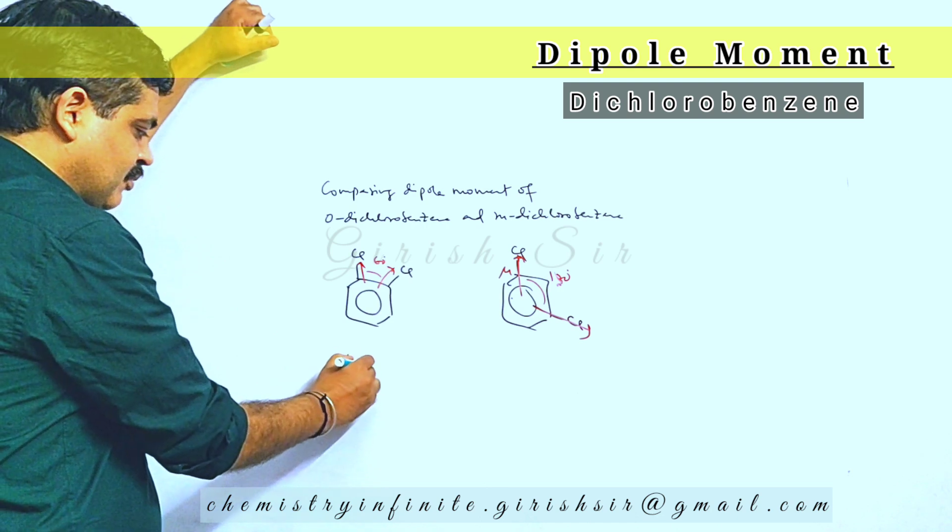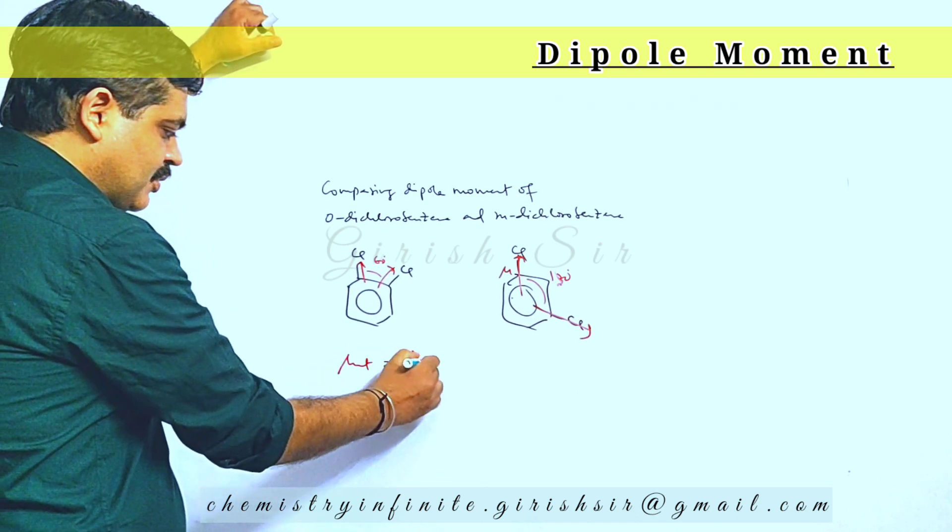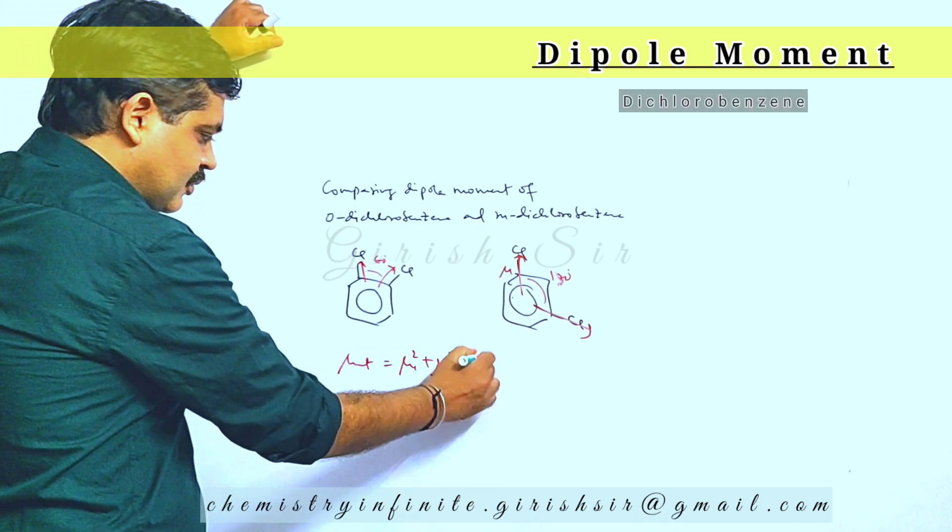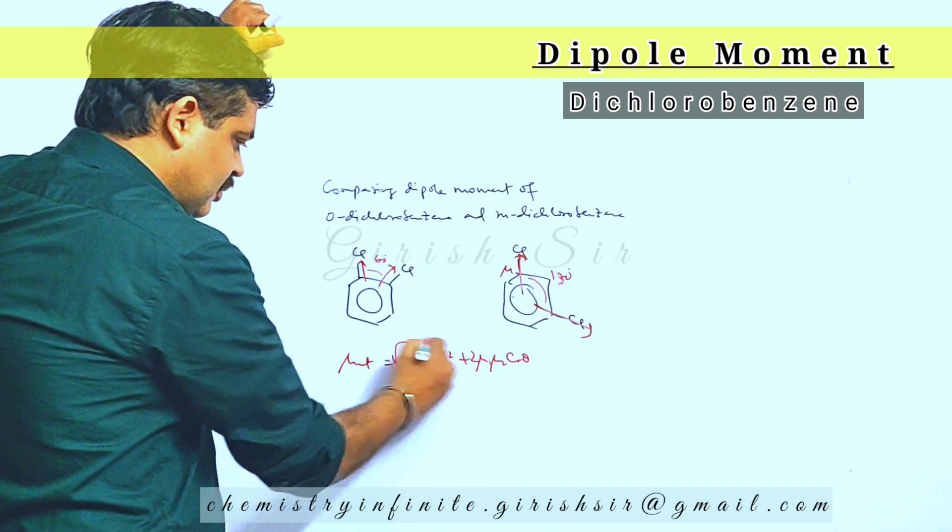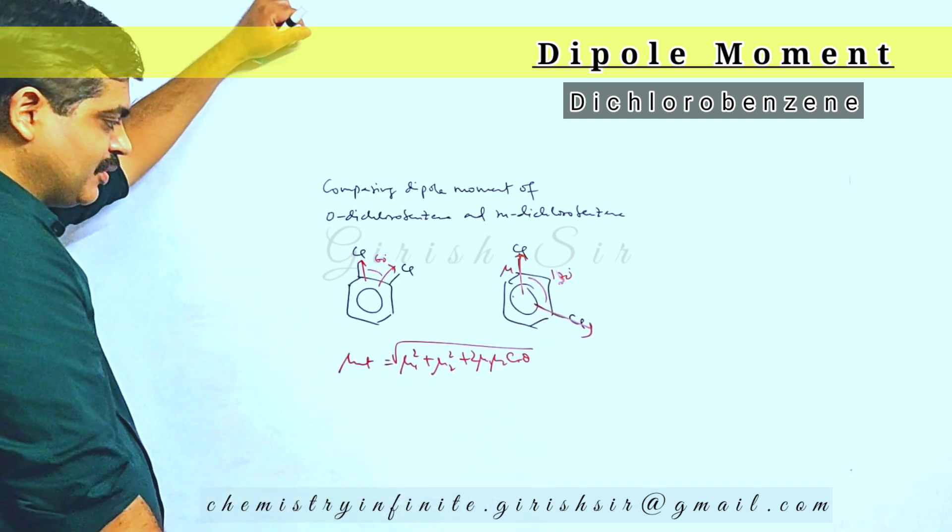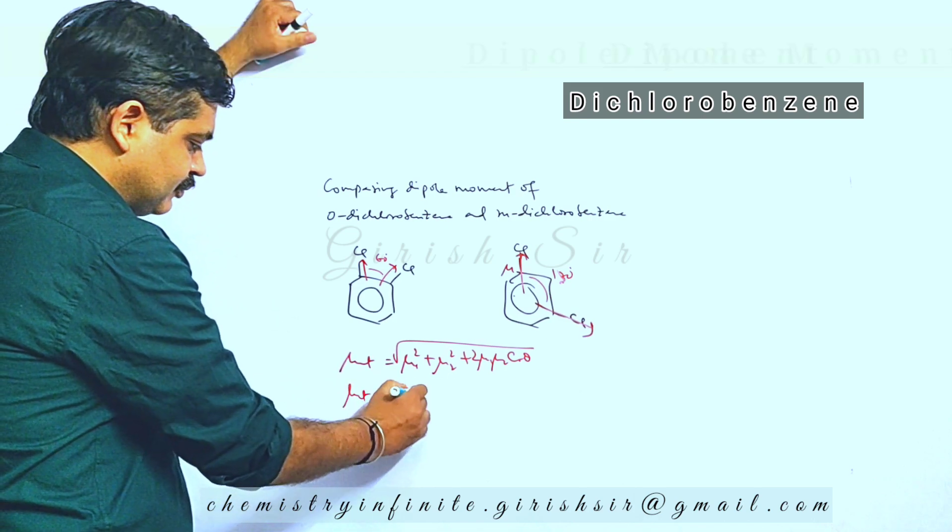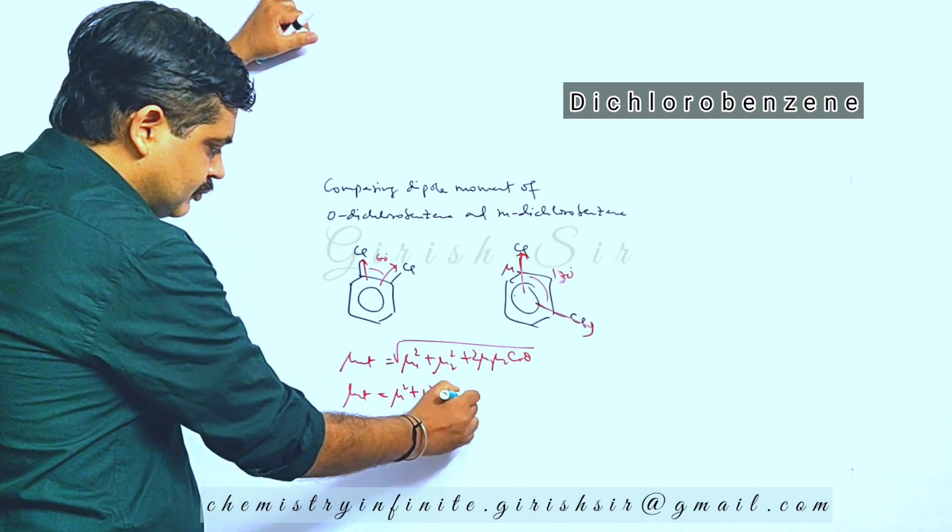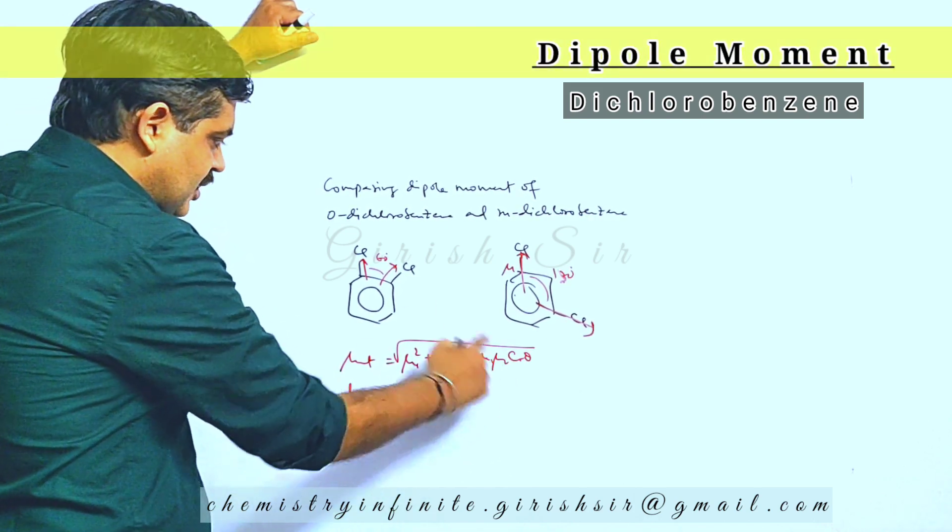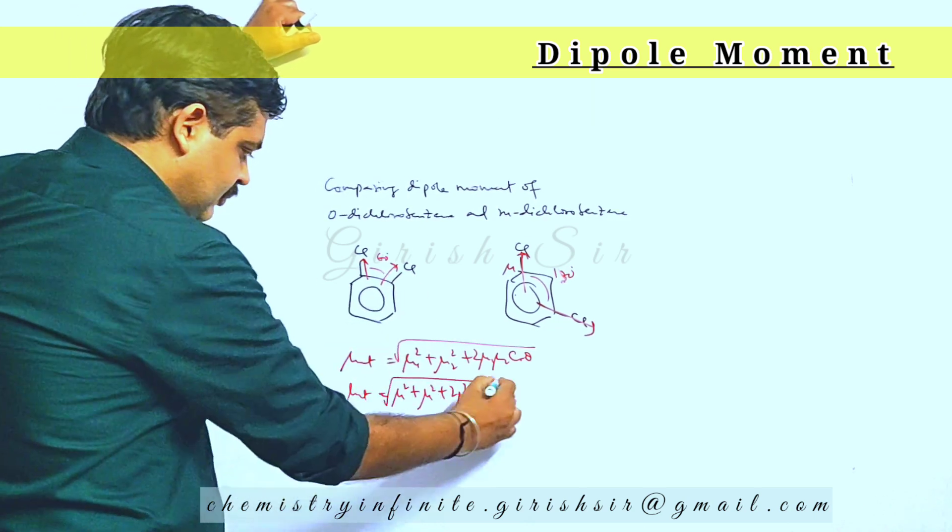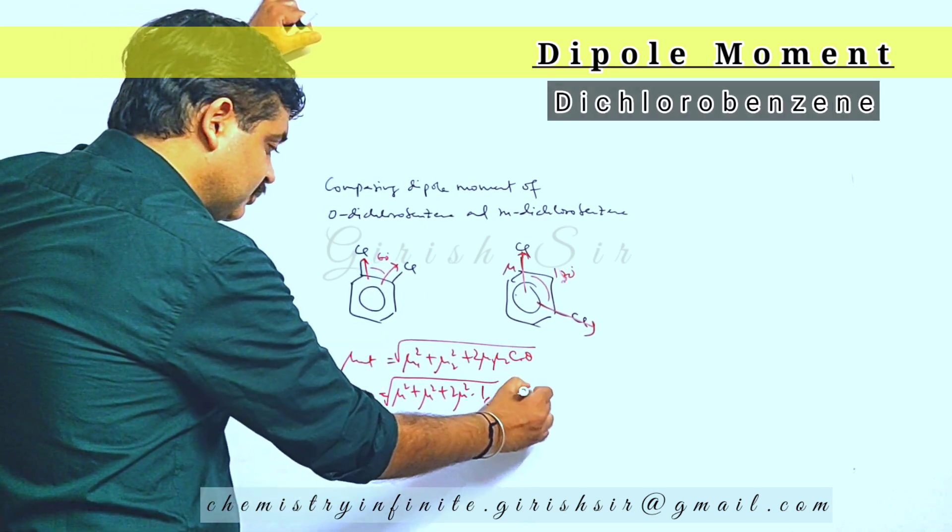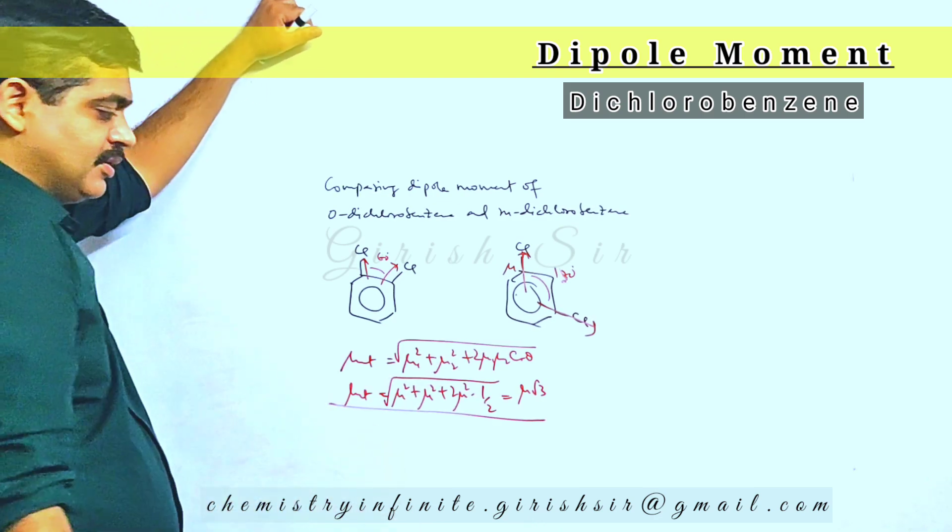Now we can use mu net formula to evaluate mu net for these two compounds. For compound 1, mu net would be equal to root of mu squared plus mu squared plus 2 mu squared cosine 60.